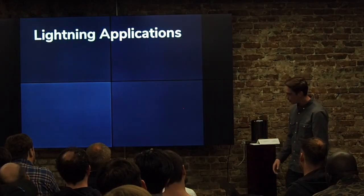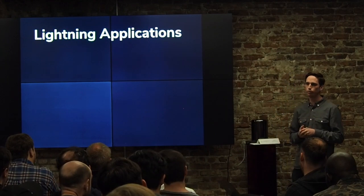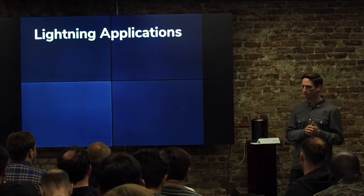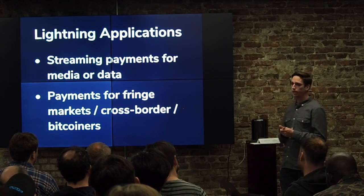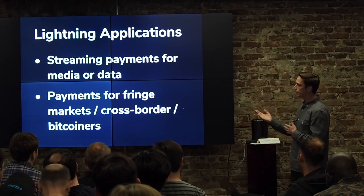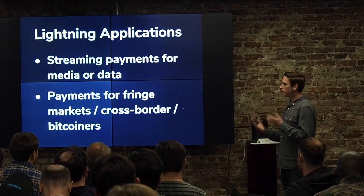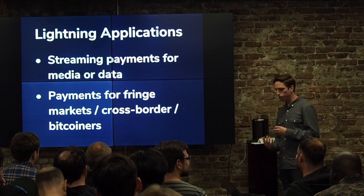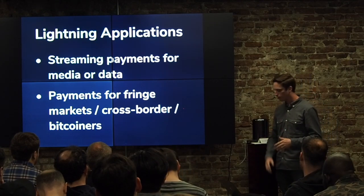The reason why I care about this is I think the applications that are really going to bring Lightning to mass adoption are things that are uniquely able to be done on Lightning that you couldn't do with existing technologies. Streaming payments for media or data is something that's really hard to do with existing technologies but on Lightning it's not as hard. The other one is obviously payments for fringe markets, cross-border, or just people that like to spend Bitcoin. But I think there are actually a ton of new use cases that really can't be done with any other system that can be done with Lightning once you have this kind of delayed settlement feature.